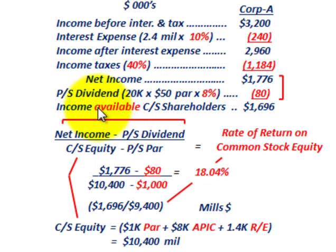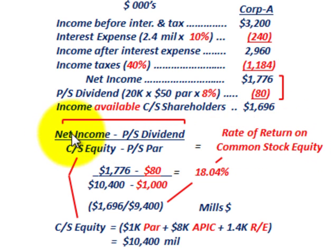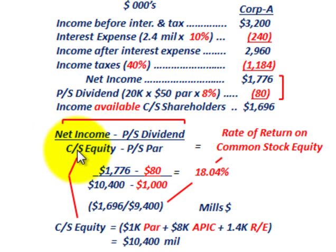The income available to common stock shareholders is what we use in the general equation for rate of return on common stock equity. We take net income and subtract out the preferred stock dividends — that's our numerator — and then divide by the common stock equity minus the preferred stock par value. That's our general equation.